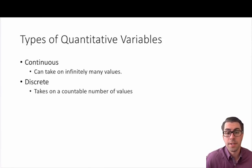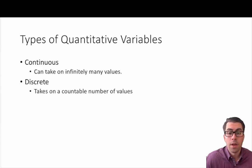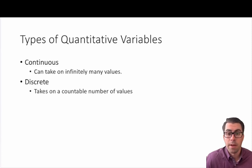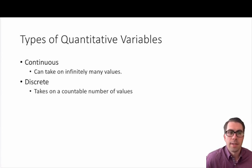When dealing with quantitative variables, there are generally two different types at a high level: continuous and discrete. A continuous quantitative variable can take on an infinite number of values. A good example is weight — when you step on the scale it might say 160 pounds, or 160.2, or 160.25. The number of decimal points is infinite, limited only to the sensitivity of our measurement device. So the measurement of weight can take on an infinite number of values and we'd label that as a continuous measure.